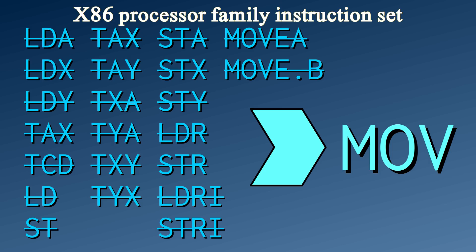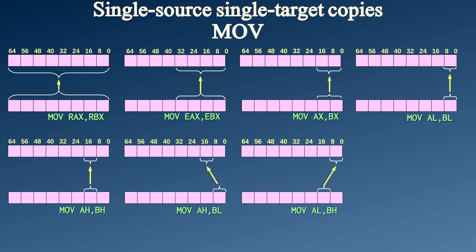When Intel made the 8086, they copied from Zilog the fantastic idea that one move instruction should be enough. You don't need a heap of different mnemonics to do the absolutely same thing. And that's why anytime you move data between the base registers, or even from and to the memory, or load constants into registers, you just use the move instruction. You can use it for 64-bit data, 32-bit data, 16-bit data, and even 8-bit data.